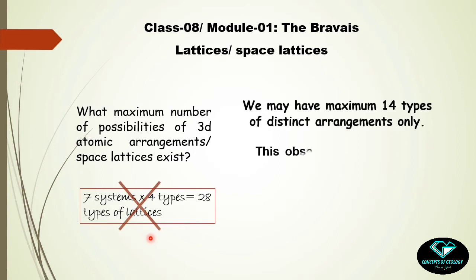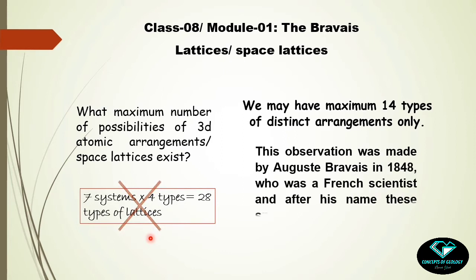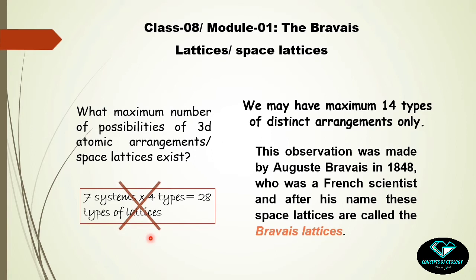But this is not the case. Only 14 types of distinct arrangements are possible — only 14 space lattices exist. This observation was made by Auguste Bravais in 1848, who was a French scientist, and after his name these space lattices are called Bravais lattices. Clearly, not all seven crystal systems permit all four variants.